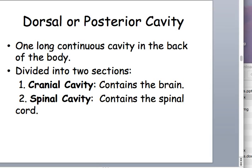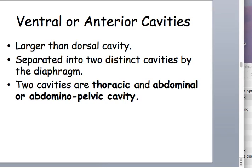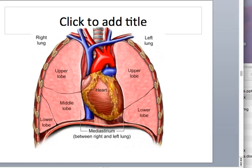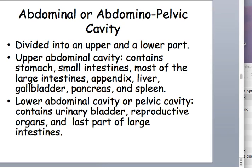The cranial cavity contains the brain; the spinal cavity contains the spine. The thoracic cavity contains more than just the heart and lungs — there's also the esophagus, trachea and bronchi, and large blood vessels. The abdominal cavity can be referred to generally as containing all the digestive guts below the diaphragm, or broken into the abdominal and pelvic cavities based on what bones surround them. The pelvic cavity is a bit lower than people expect — in females it contains the uterus and ovaries; in males, part of the reproductive system.